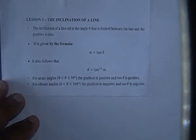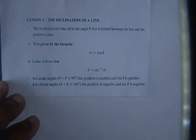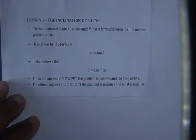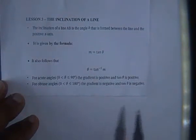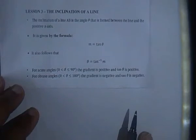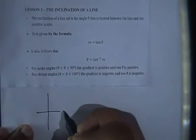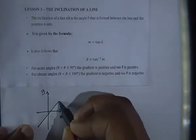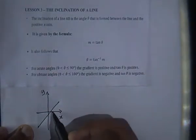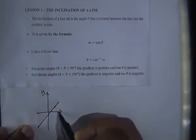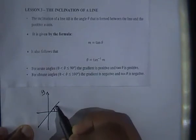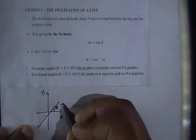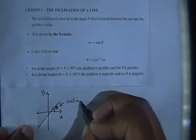Today we're going to learn about the inclination of a line. The inclination of a line AB is the angle theta that is formed between the line and the positive x-axis. If we draw a linear graph, your x-axis and y-axis with a straight line, the angle formed between that line and the x-axis is what we call the inclination angle theta.